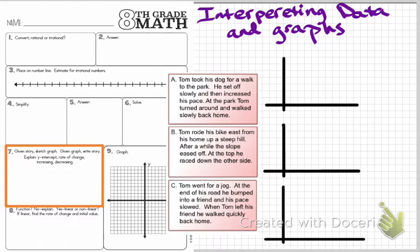He set off slowly and then increased his pace. At the park, Tom turned around and walked slowly back home. We're looking for clue words that describe what is happening in this story. The things I'm going to be comparing in this graph are time and distance — how far Tom has traveled from his starting point over how much time.